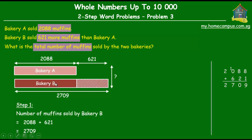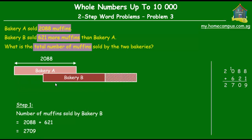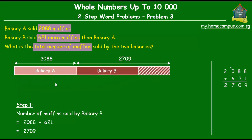It's just the sum of these two, right? So that would be the sum of 2,088 and 2,709. All right. So let's do that.